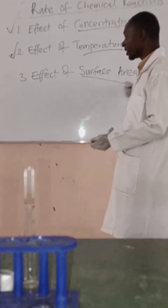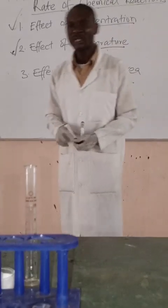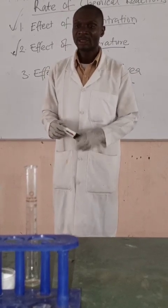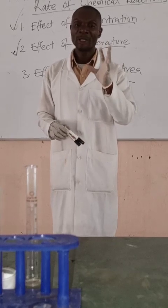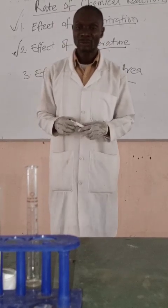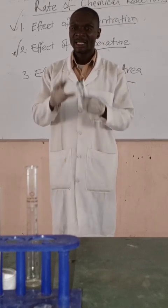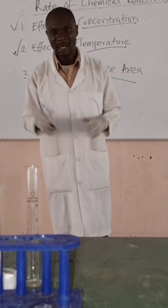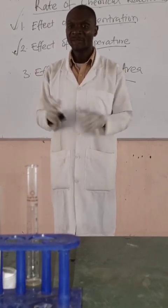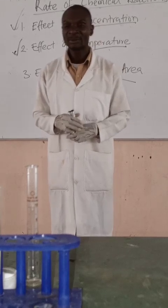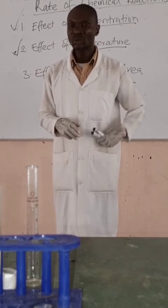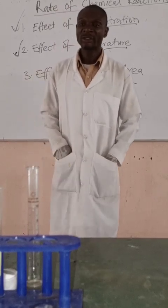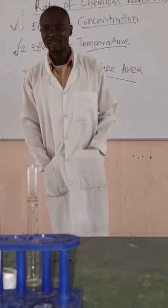Now we go to effect of surface area. We are using zinc solids and zinc powder. Zinc powder is made up of fine powder of zinc particles, while zinc solid is a block, a bigger particle of zinc solid. We are going to react both of them with 3 molar hydrochloric acid solution to test for effect of surface area on rate of chemical reaction.